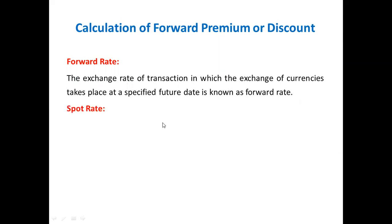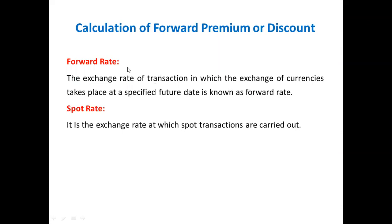Spot rate: it is the exchange rate at which spot transactions are carried out. The forward rate is the rate when the transaction takes place after one month, two months, three months, 90 days, or 30 days in a future period — that we call the forward rate. The spot rate is the two-days rate; the rate at which the transaction takes place we call the spot rate.